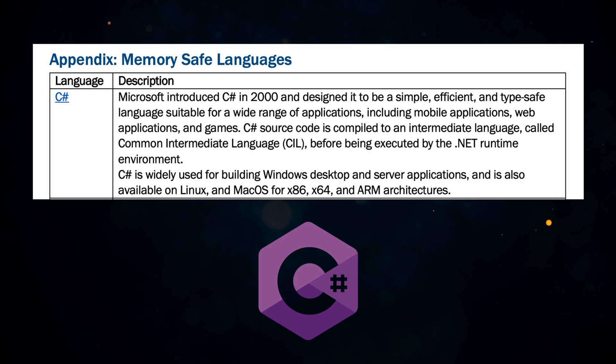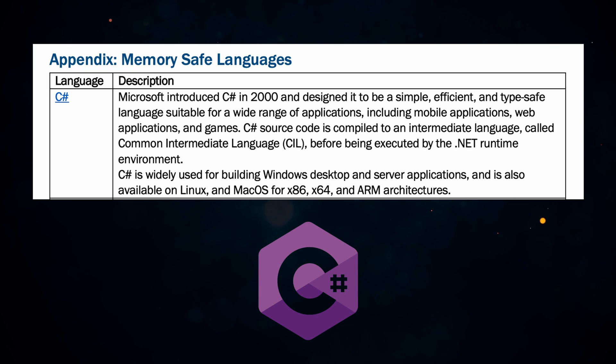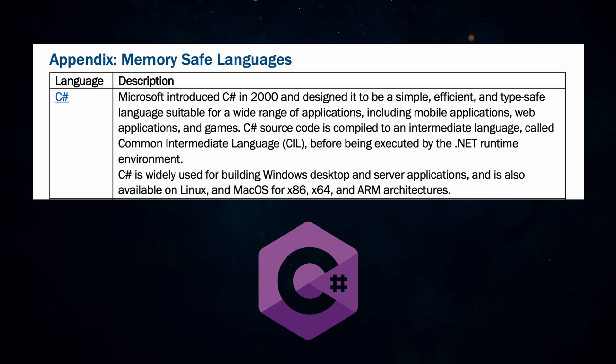Number three is C#, another language I love. C# is widely used for building Windows desktop and server applications and is also available on Linux and macOS for x86-64 and ARM architectures. It's also a memory-safe language because memory is managed automatically, which means you don't introduce bugs from having to manage it yourself.